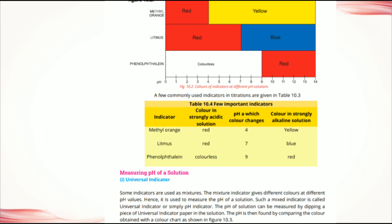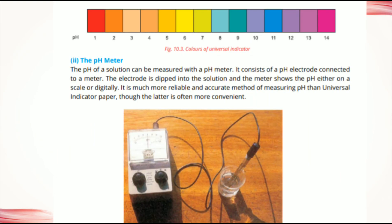How can we use the universal indicator and how can we find the pH of different solutions? The pH of a solution can be measured by dipping a piece of universal indicator paper into the solution. The pH is then found by comparing the color obtained with a color chart.